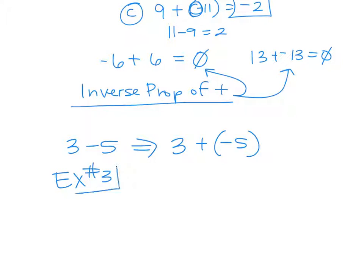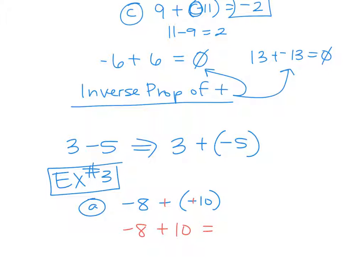Example 3. Let's say I give you the problem negative 8 minus a negative 10. Someone said it earlier — when you subtract a negative, isn't it the same as adding a positive? This is where that happens. To turn this into an addition problem, minus a negative is plus a positive. So our problem that we're solving is negative 8 plus 10. Do I add or subtract those numbers? When they have different signs, you subtract them. So you would do 10 minus 8 is 2. What sign do I give that 2? Positive — because my bigger absolute value was positive. The 10 was positive. So this is positive 2. Negative 8 minus a negative 10 is 2.